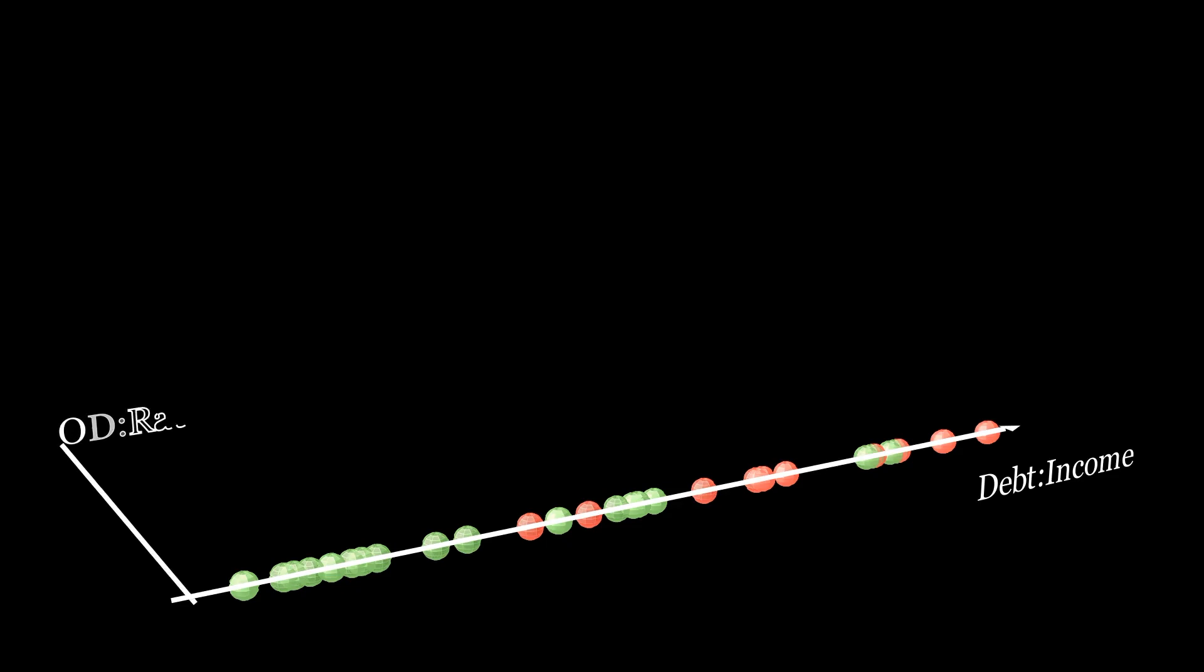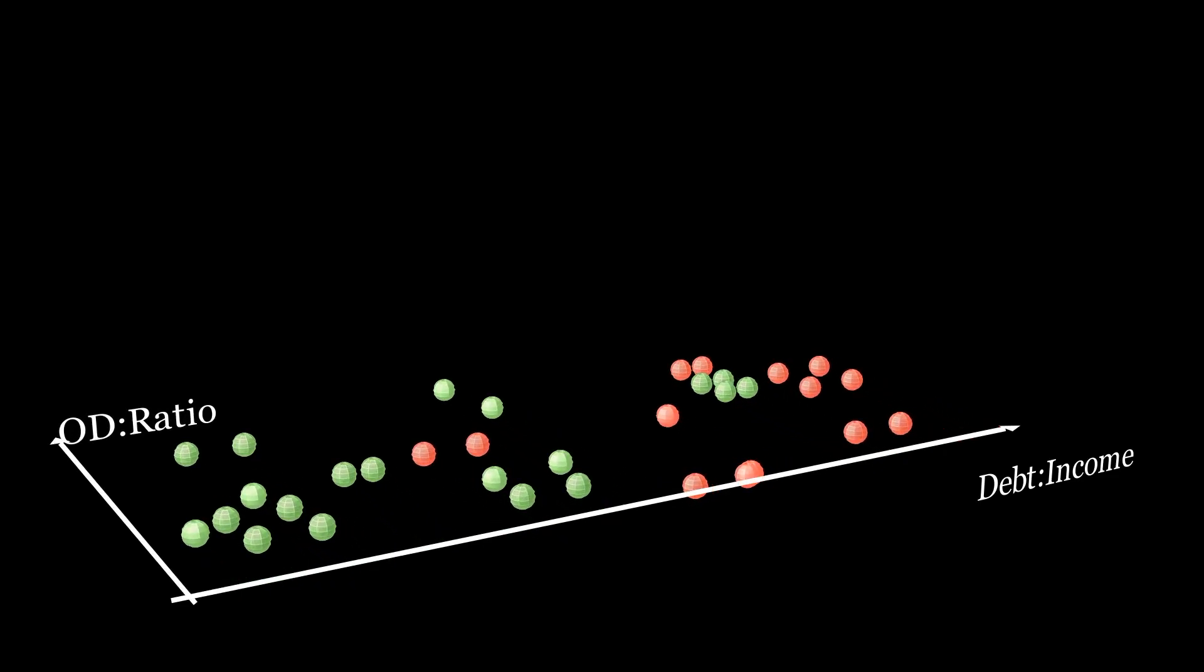Let's take a look at a still simplified but more realistic example with our loan default data set. So that we can render the information on the screen, we'll look at a feature vector containing just three terms: the debt to income ratio, the overdraft ratio, and the credit rating.